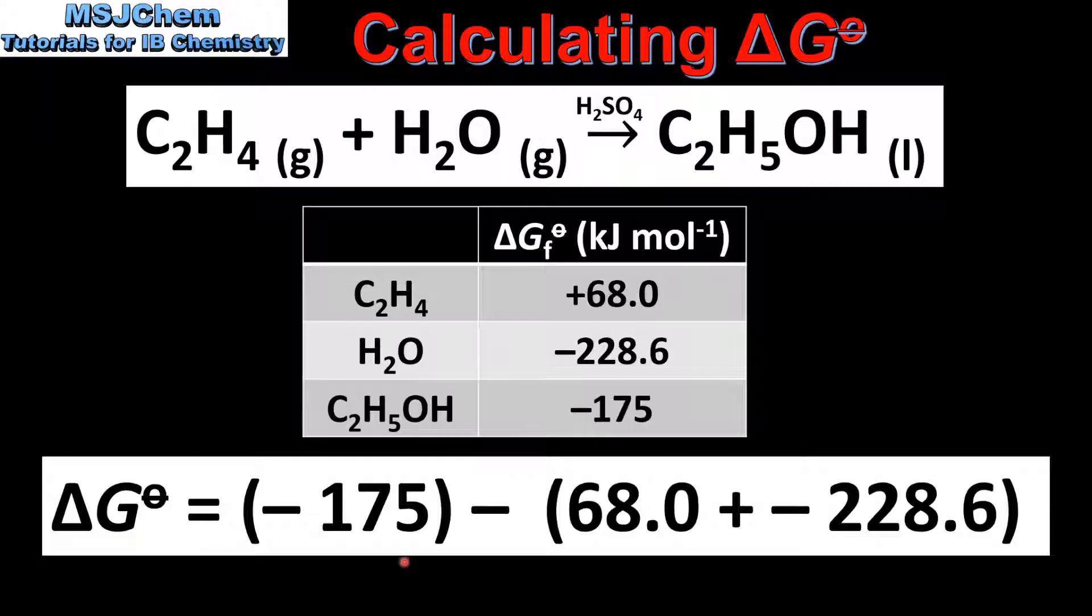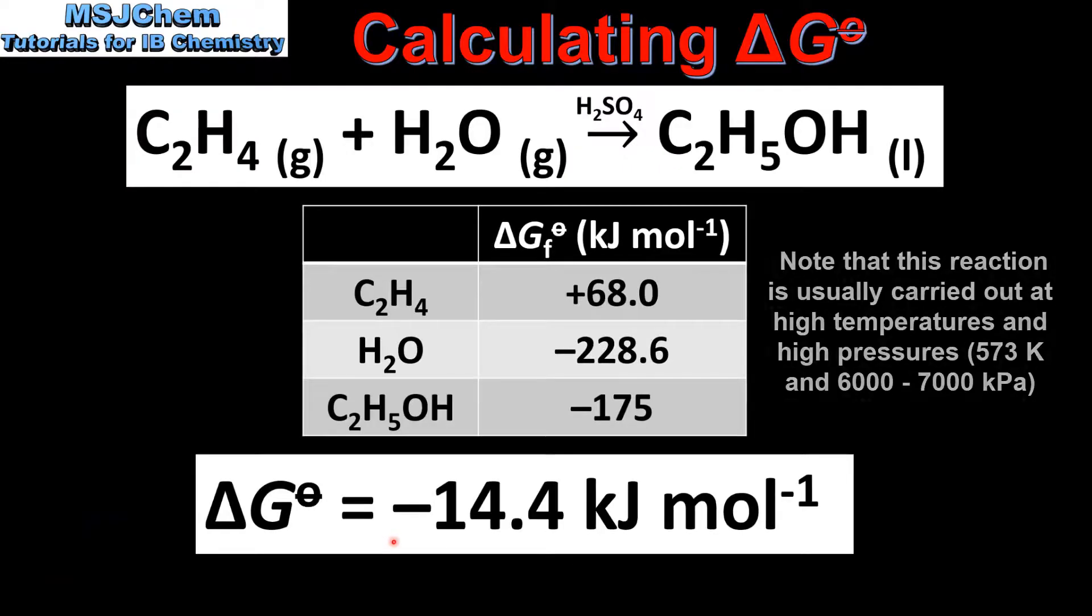So next we input the values into the equation. So we have the sum of the Gibbs free energy of formation of the products minus the sum of the Gibbs free energy of formation of the reactants. This gives us a value for the standard Gibbs free energy change of negative 14.4 kJ per mole. The negative sign tells us that the reaction is spontaneous under standard conditions.